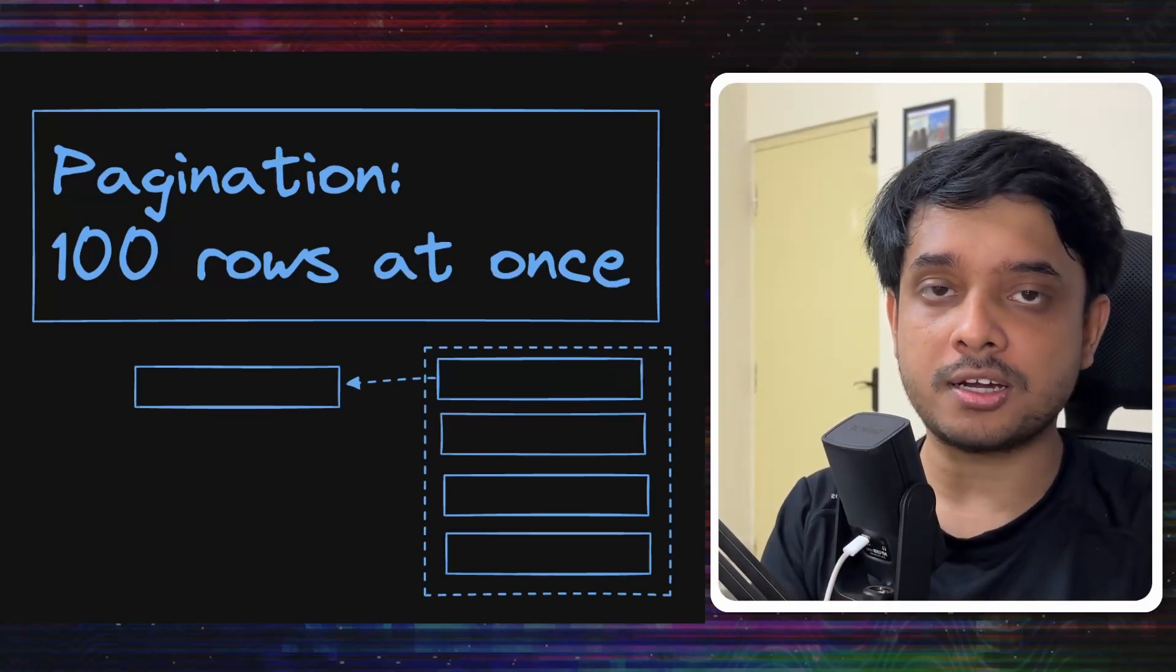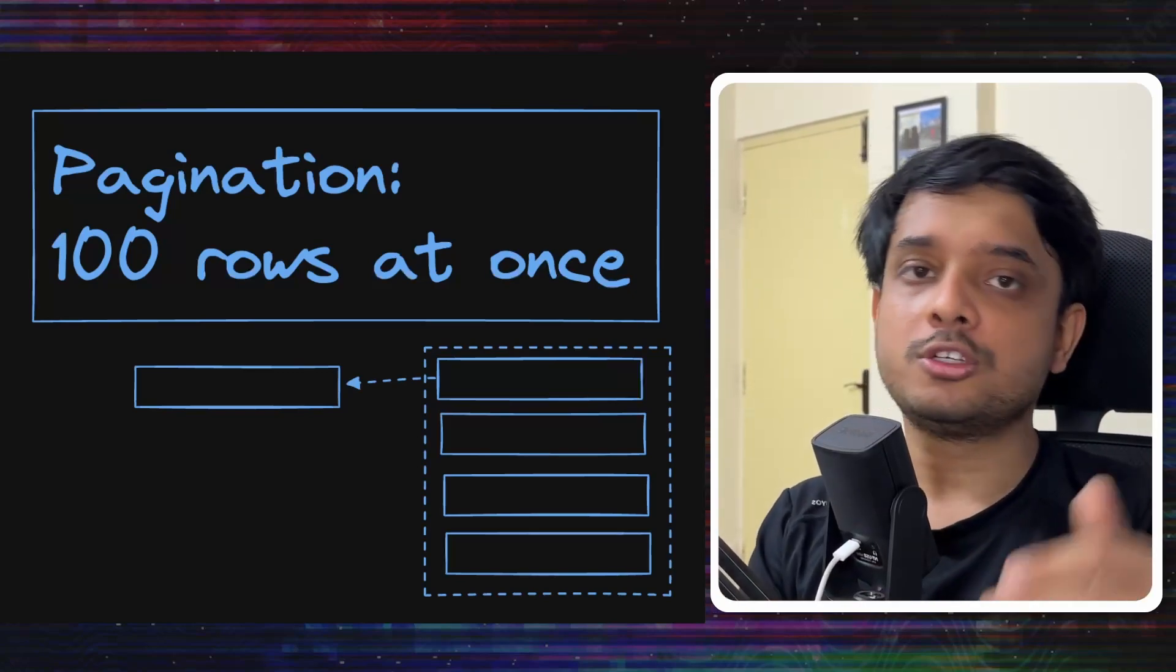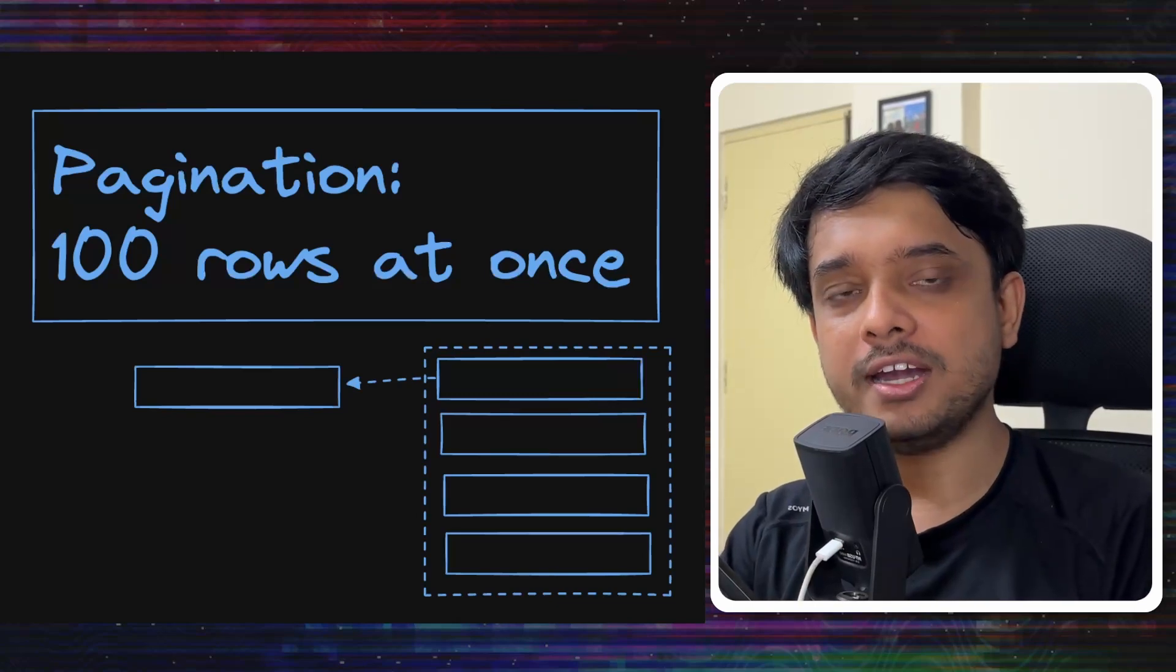Then it will send the next 100. Then again it will send the marker, then it will send the next 100. So it will happen four times and we will get all our data.